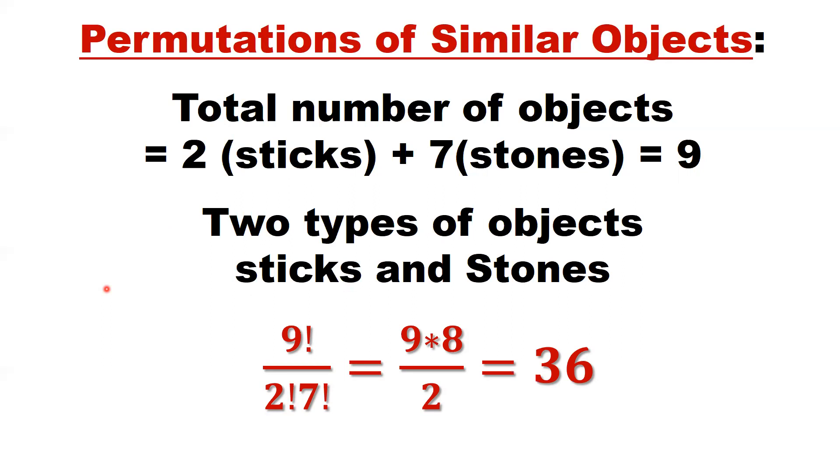Total number of objects. We have two sticks and seven stones. Put them online. Nine. That's nine. Two types of objects. Sticks and the stones. So the formula to calculate the total arrangement, total permutations, is this. Nine. That's the total number of objects. Here, two factorial. What does that mean? This is the first type of objects. That's a stick. How many there are? Two. That's two factorial. This is the second type of objects. That's the stones. How many? Seven. So simplify this. We have here. Nine factorial means nine times eight times seven times six times five and so on. The last one is times one. Similar here. Two factorial is two times one. Seven factorial is seven times six. Then simplified. We have the answer is 36.